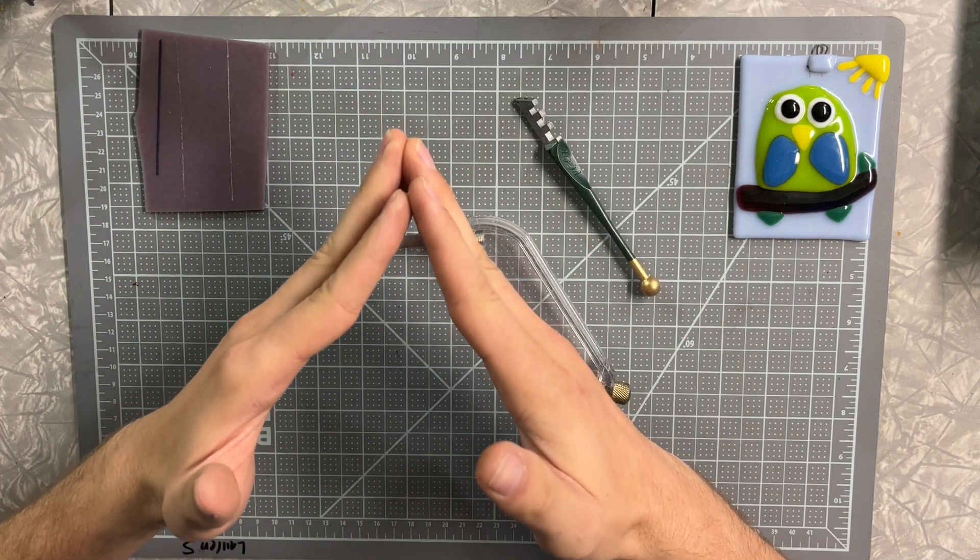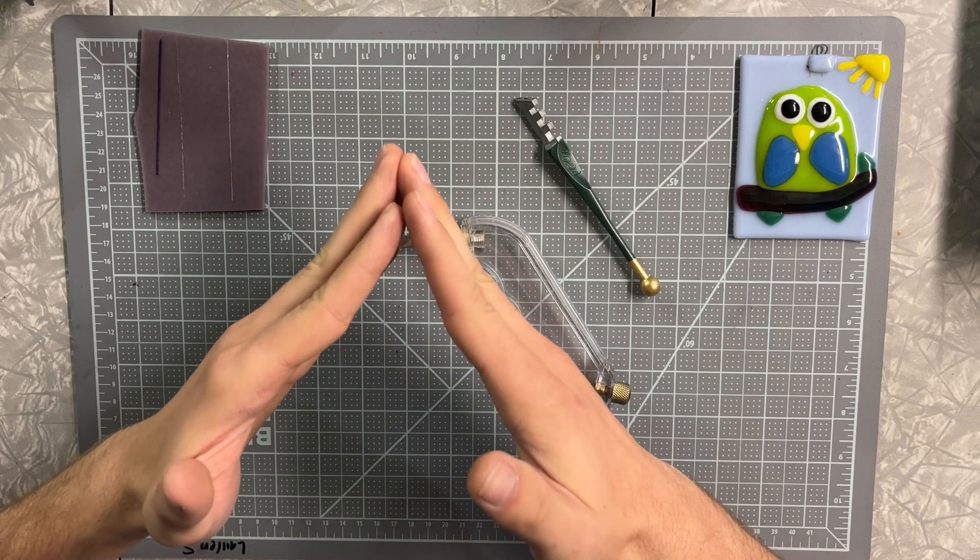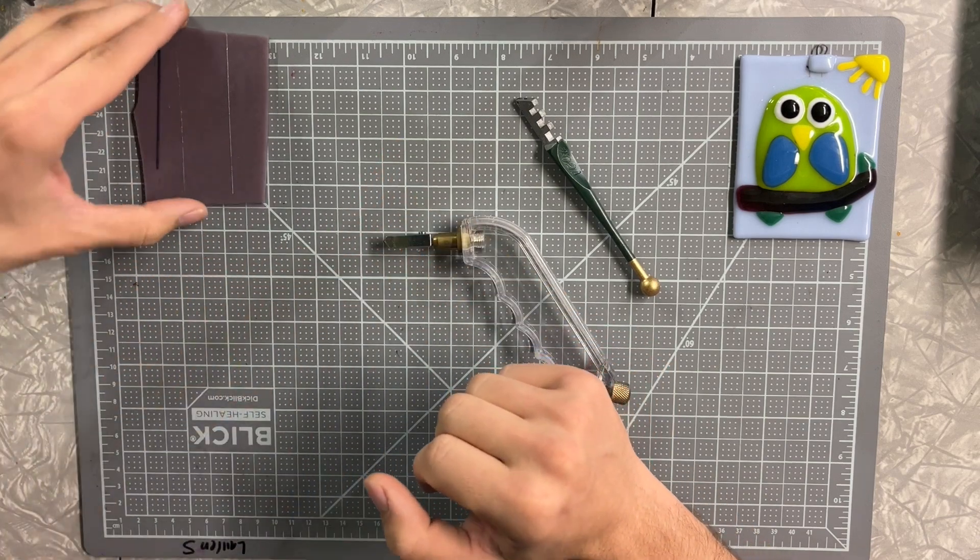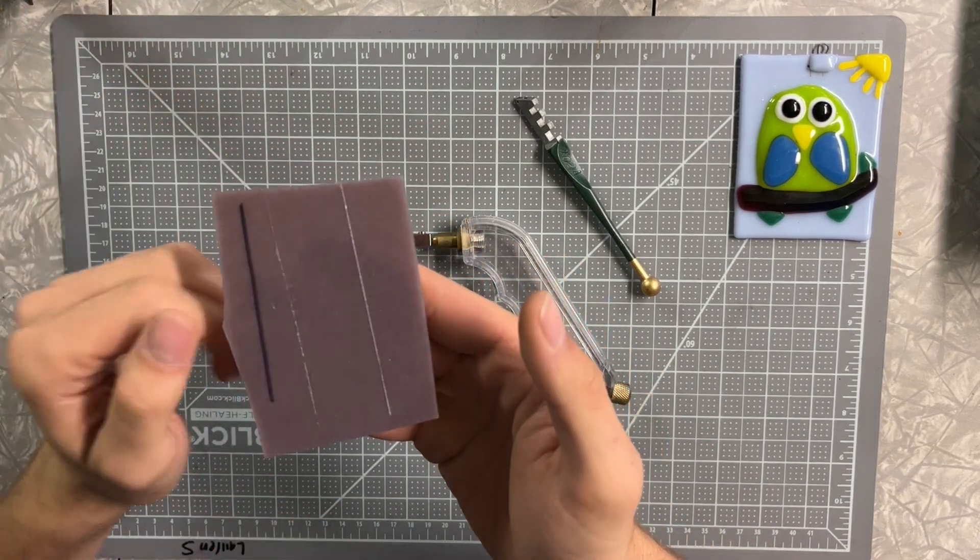When you put downward pressure on the glass cutter, it's putting all the pressure to that little point, and then it creates this line which we're going to break the glass on.